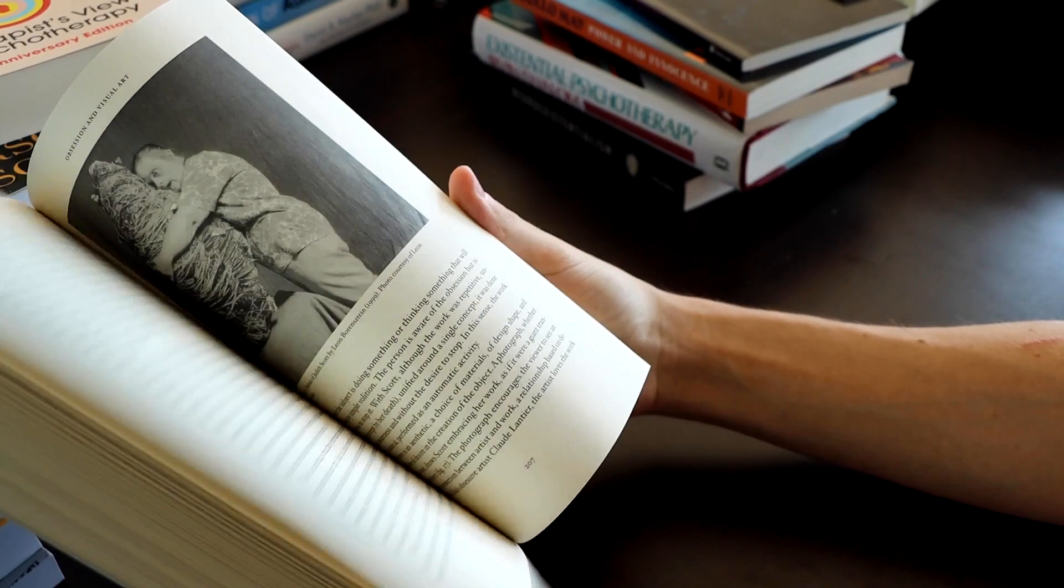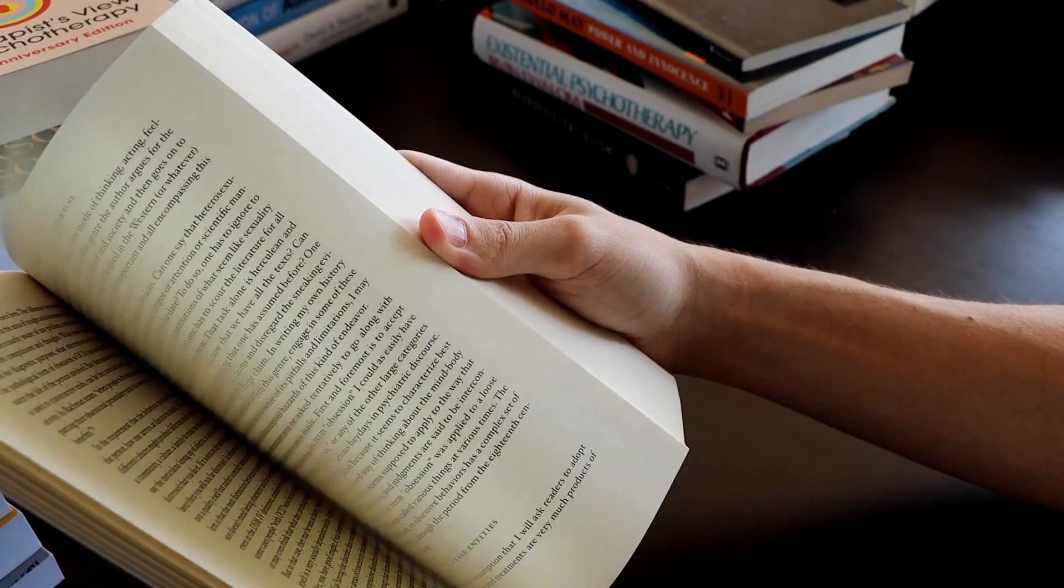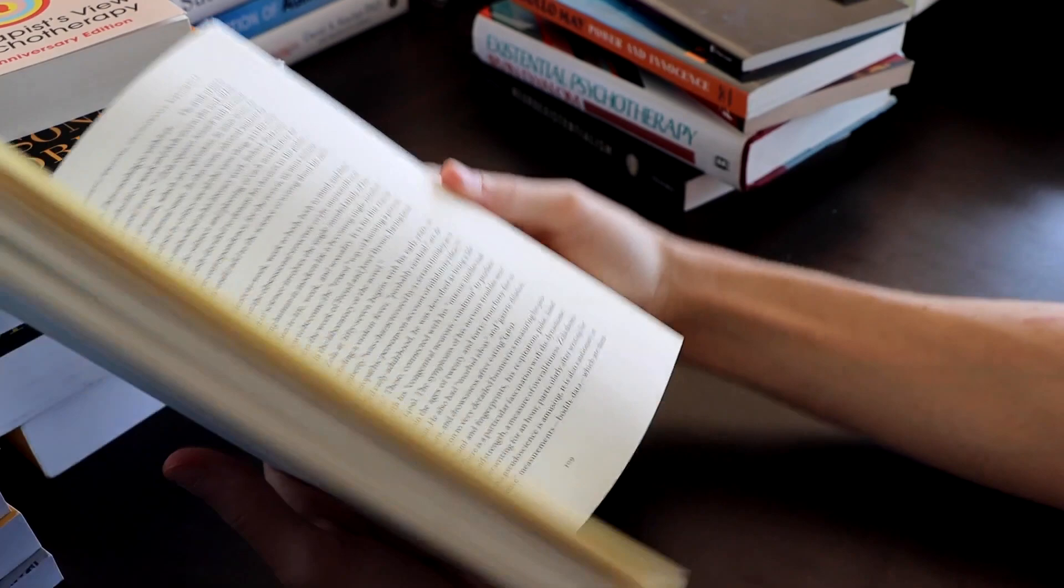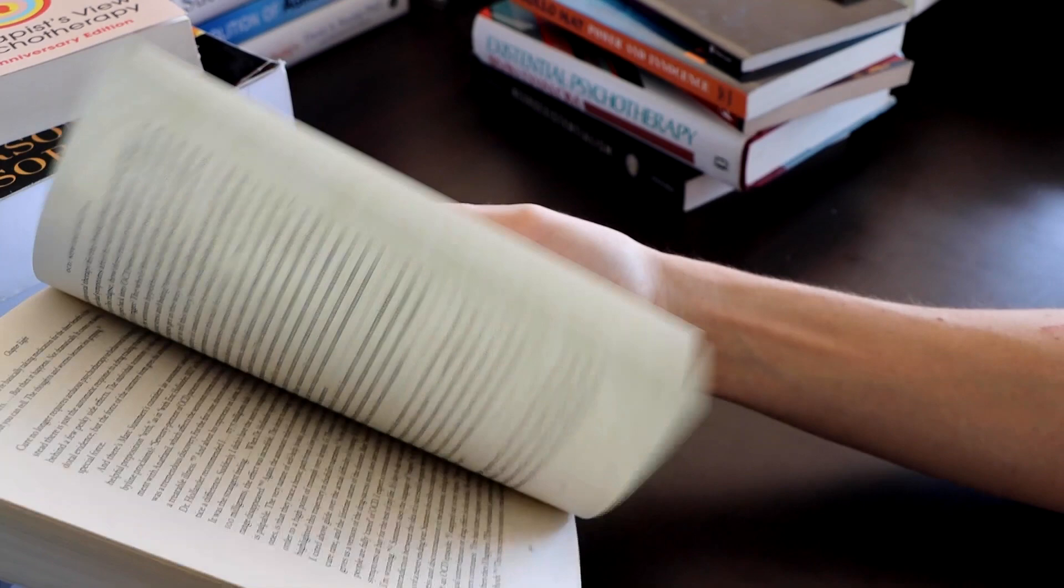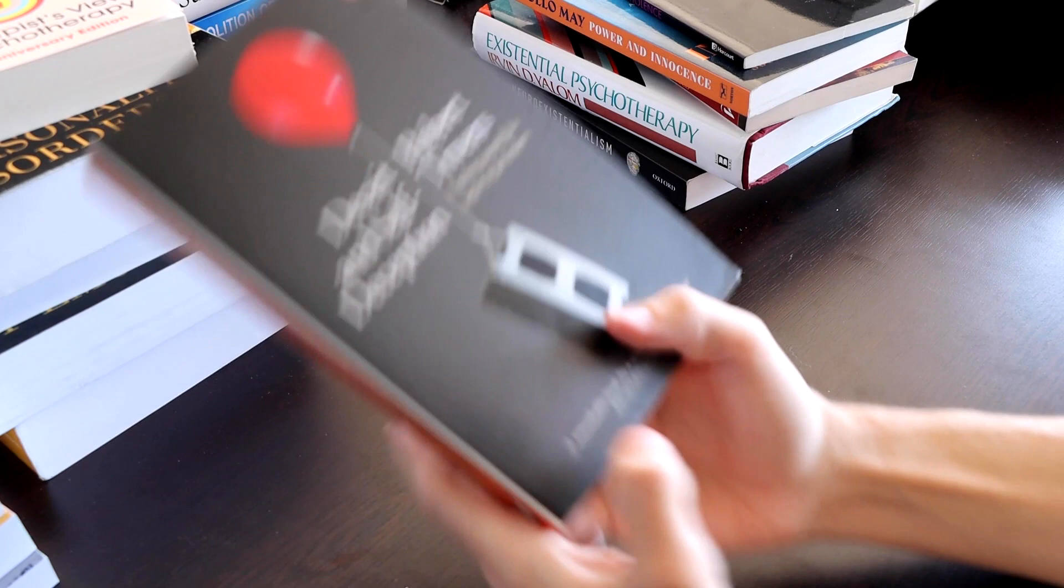Obsession. Just a book about obsessions, like obsession in history, obsession in modern times. Like people being obsessed with their phones versus people being obsessed with their little plastic wooden toys or whatever. I can't find the table of contents, but this is just like a really cool book. Again, like abnormal psychology stuff.